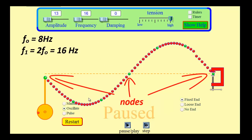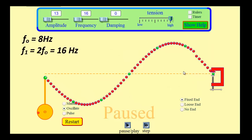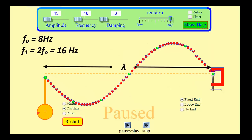I'll freeze it here. Antinode here, antinode here. What we see is actually one full wave when we pause the simulation — so that's the first harmonic. All I've done is gone from my fundamental frequency of 8 and added 8 hertz to get 16. So adding another 8 hertz would give me 24. Let's see if I get another standing wave.